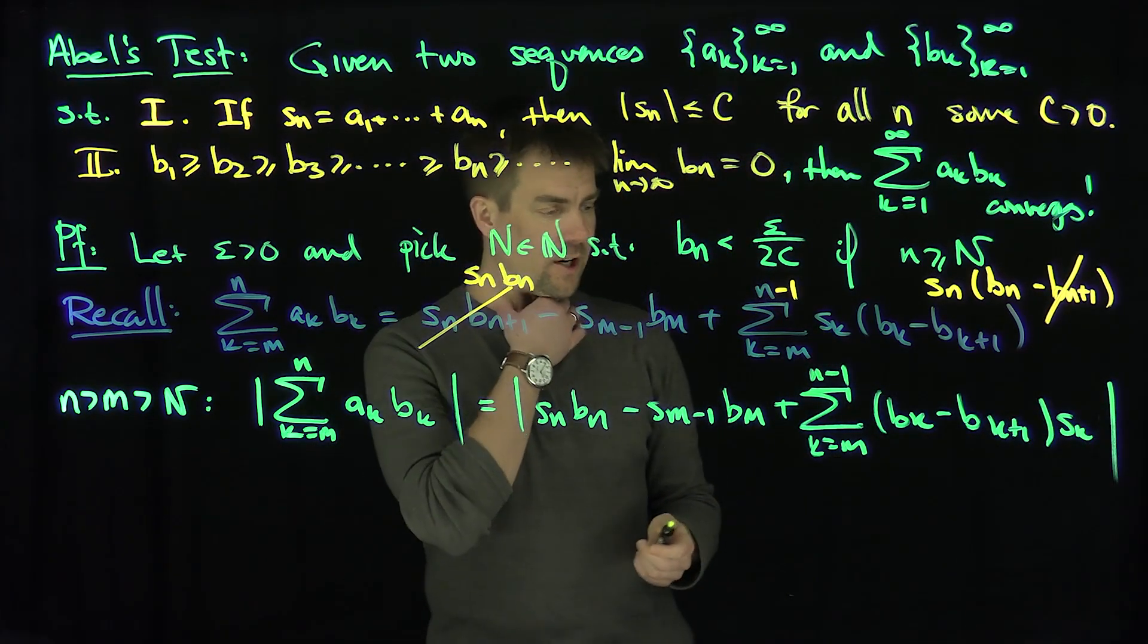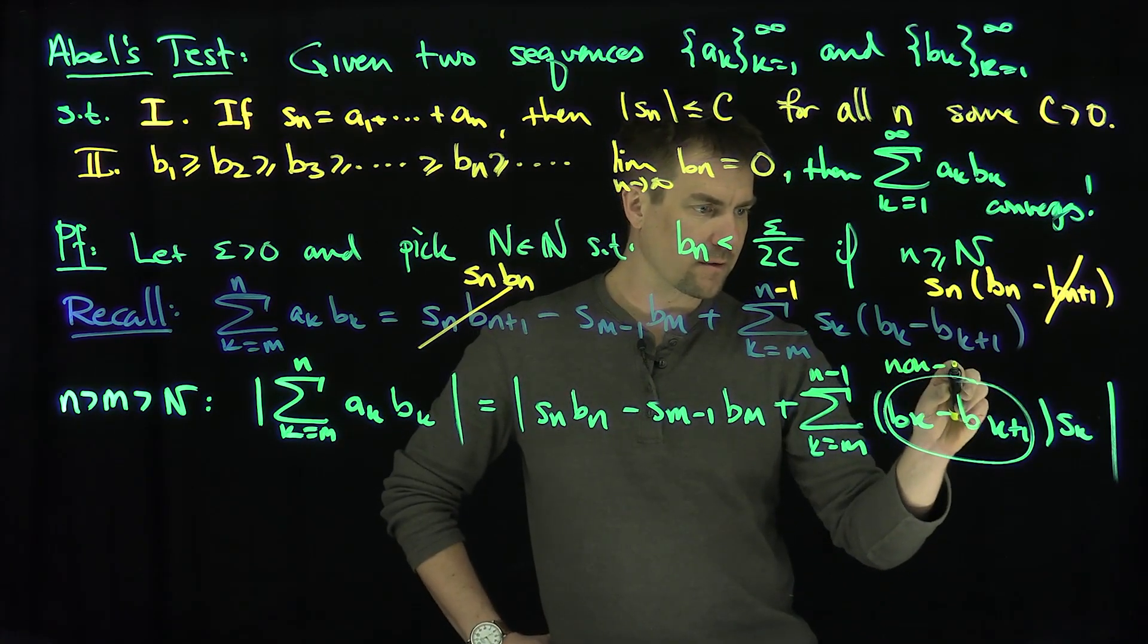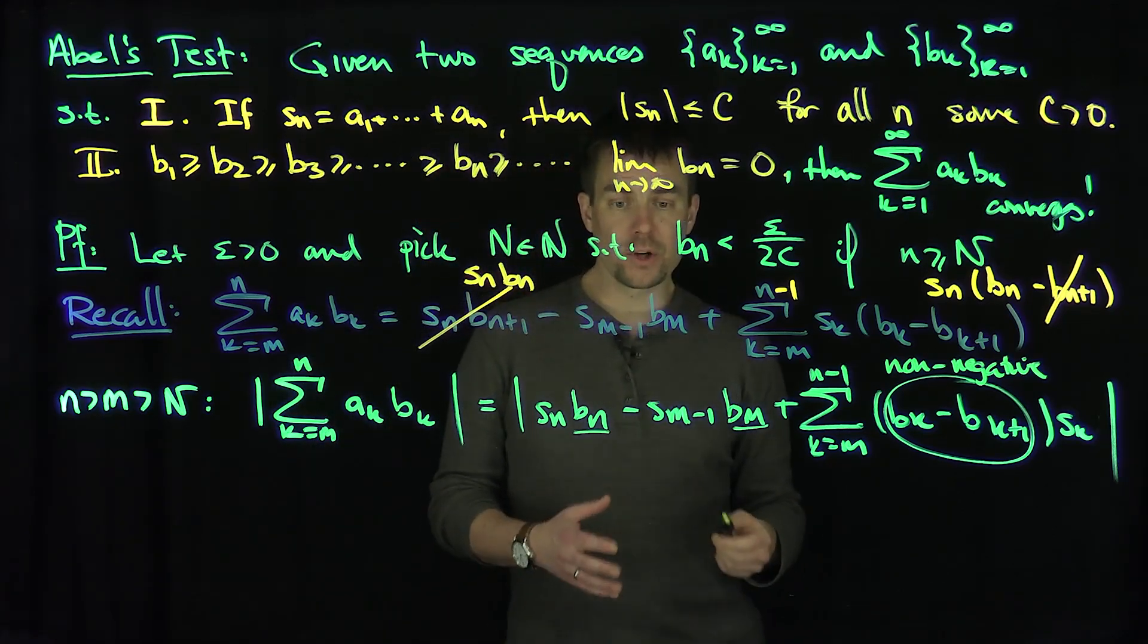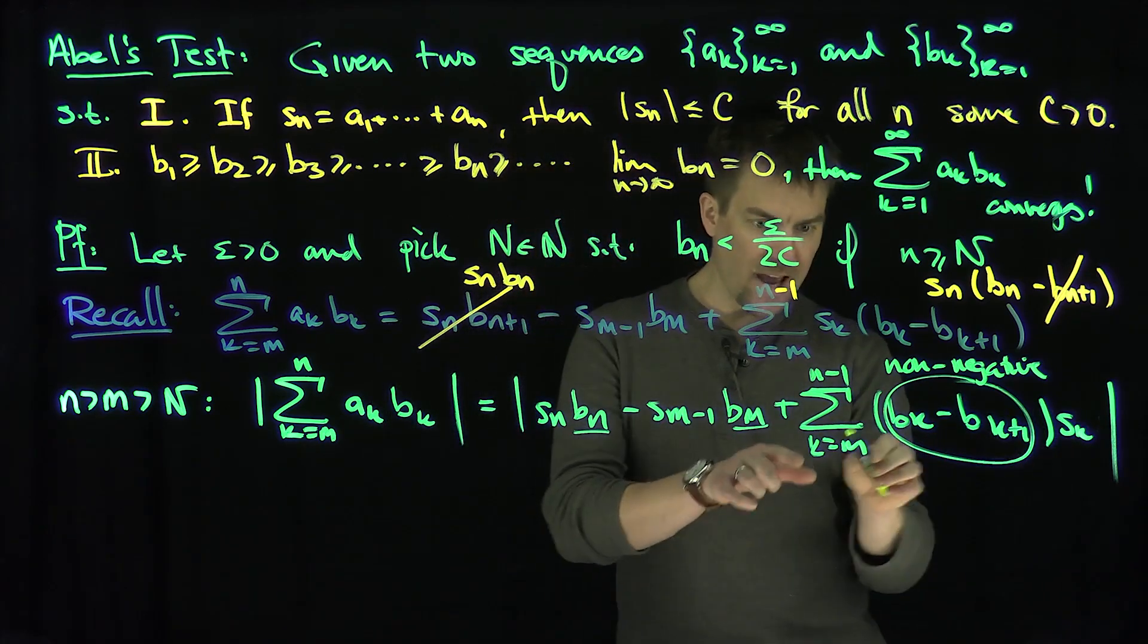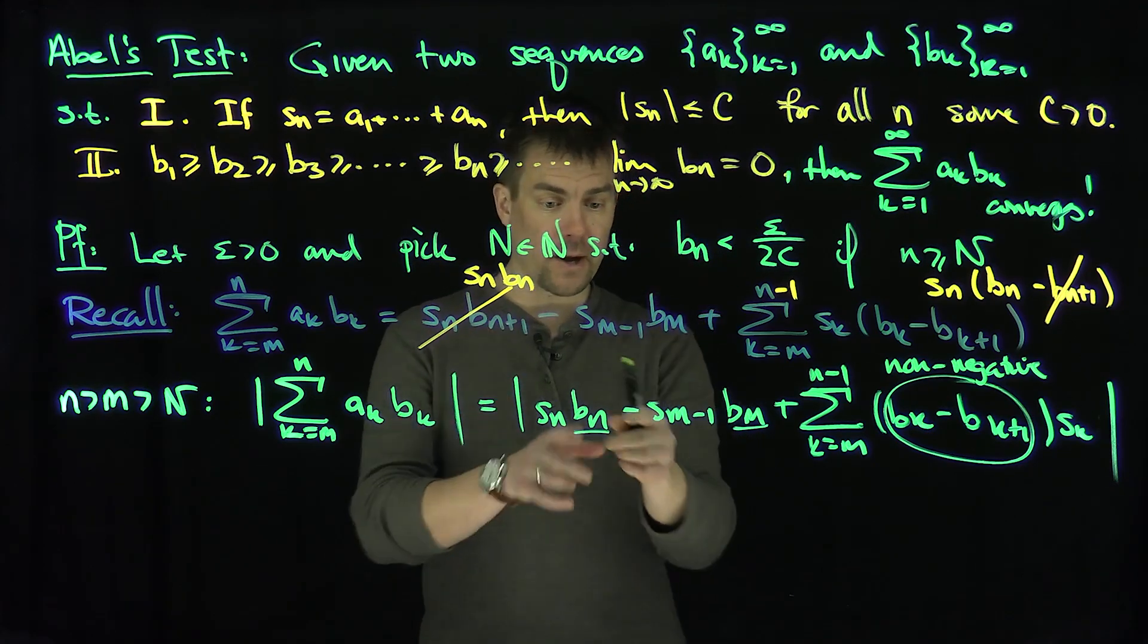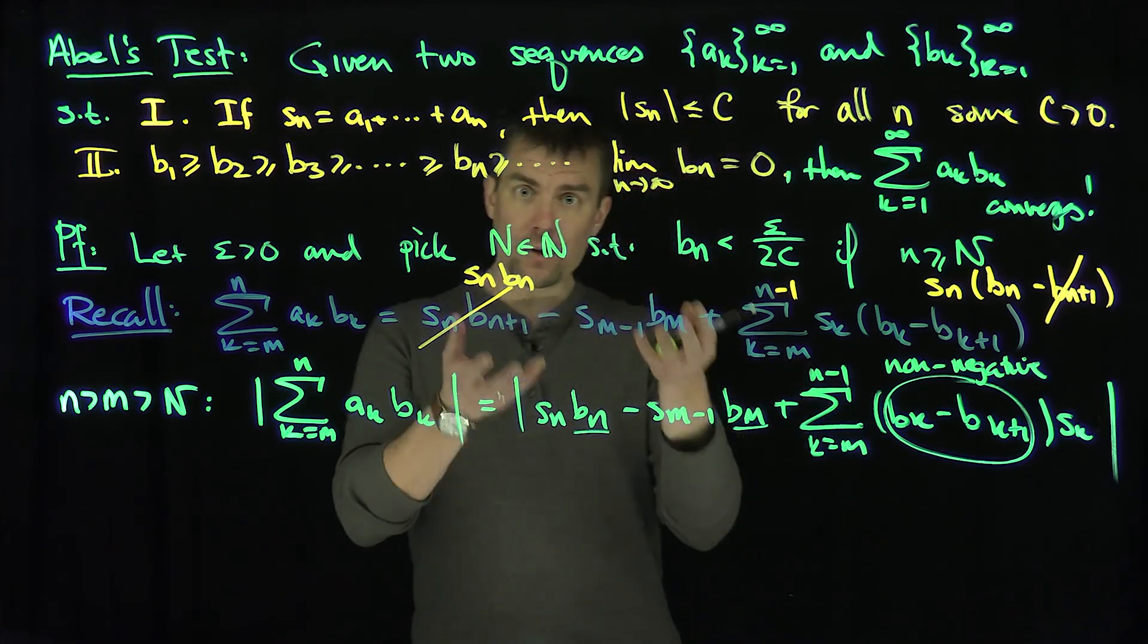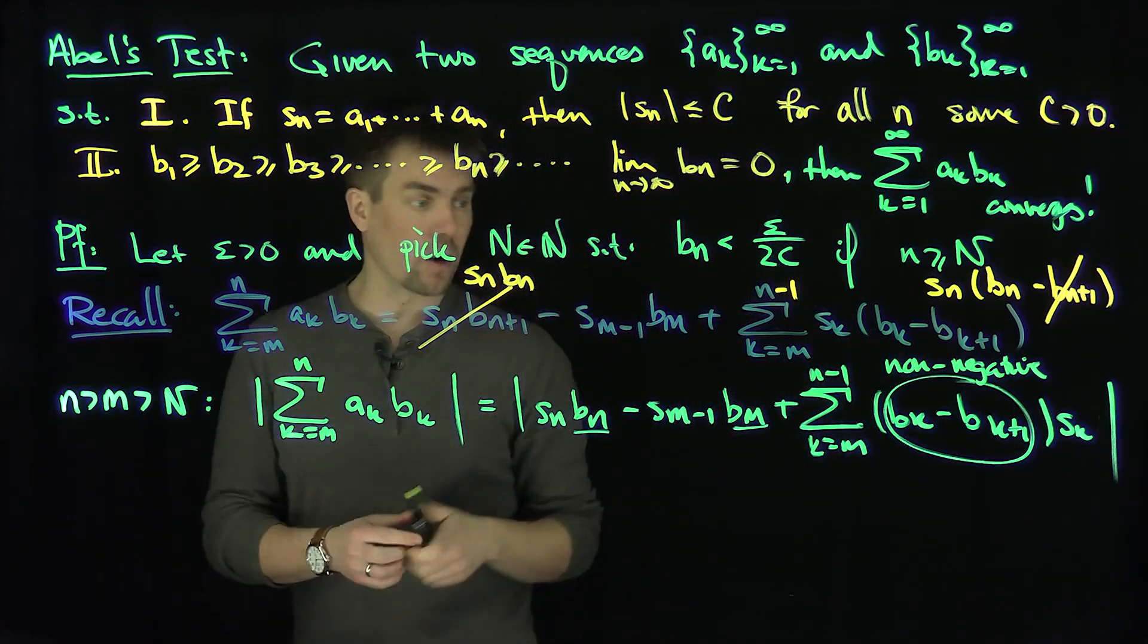Now what can we notice? These terms are greater than or equal to zero. These are non-negative. I can make this whole expression bigger by getting rid of that, turning that negative into a positive and replacing s_n, s_m, and s_k for k between m and n-1 with that constant c. That's the absolute largest any of those can be.